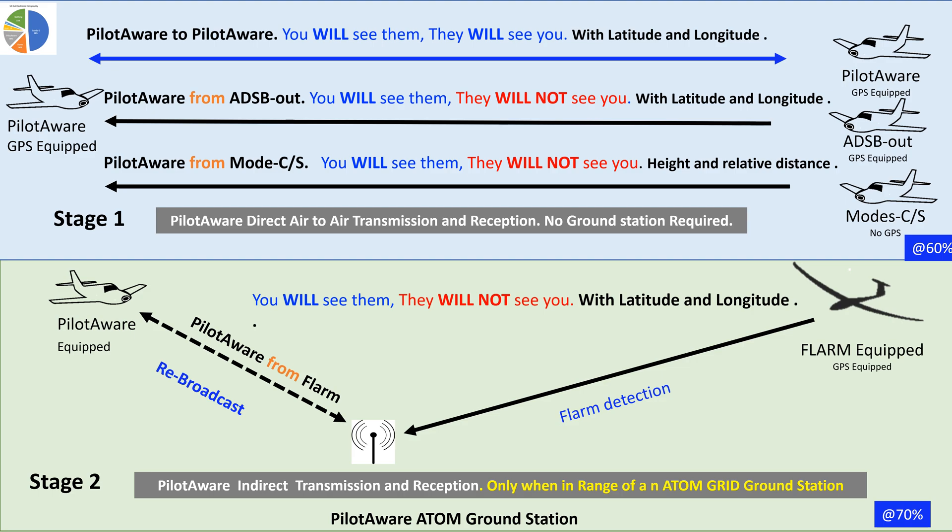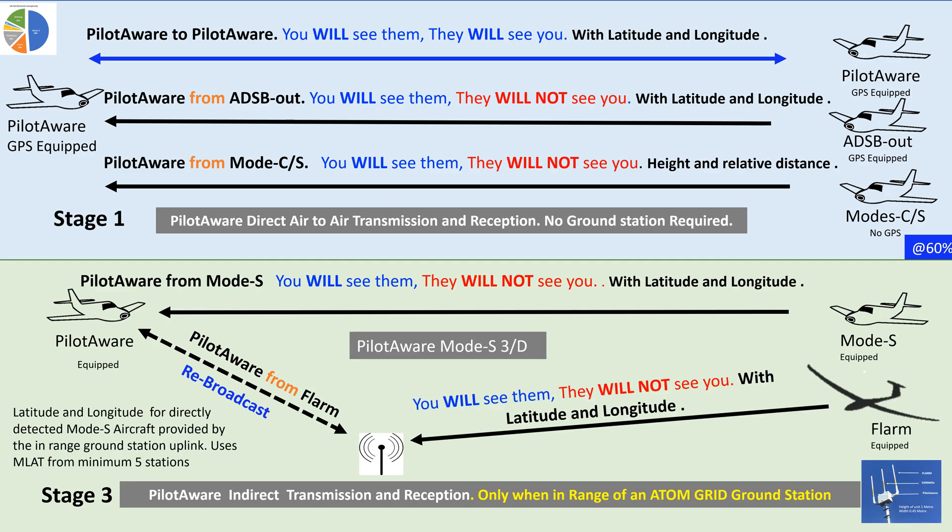This has been very successful. With the help of the Atom grid infrastructure, PilotAware can detect 85% of all aircraft transmitting an EC signal. But that was still not good enough for us. The real prize would be how to detect the 60% of aircraft that already have a Mode S transponder and present them as a target with a GPS location, just like ADS-B. That was a real engineering challenge, but with the help of the Atom grid ground station it's now being done.